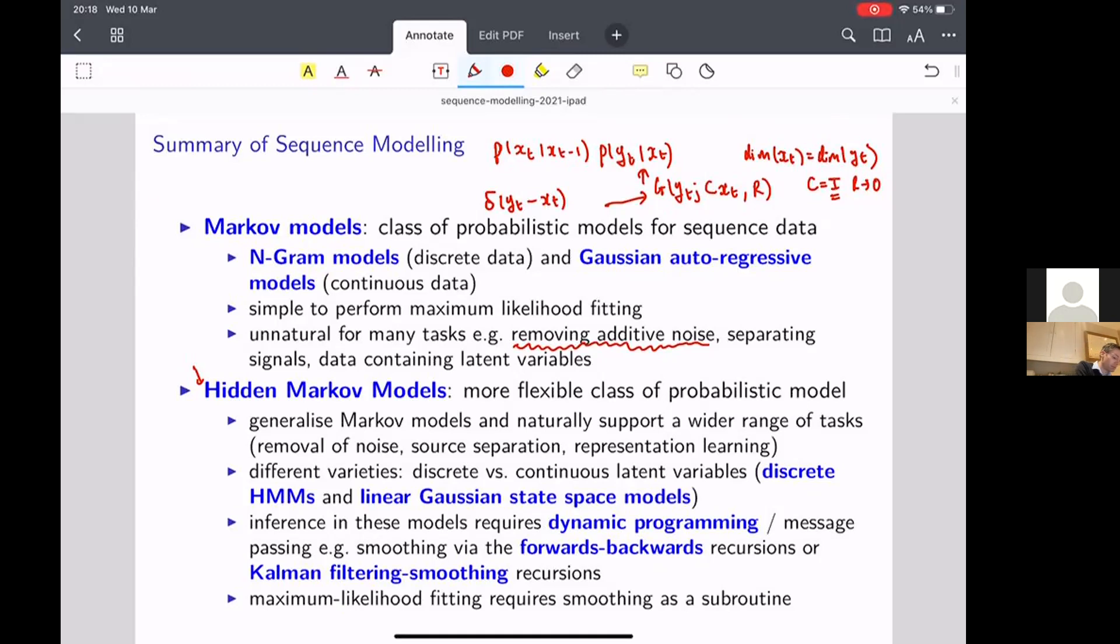And what that then means is if we were going to write down the probability of Y one to T given theta, that's just equal to the integral of now a set of delta functions.